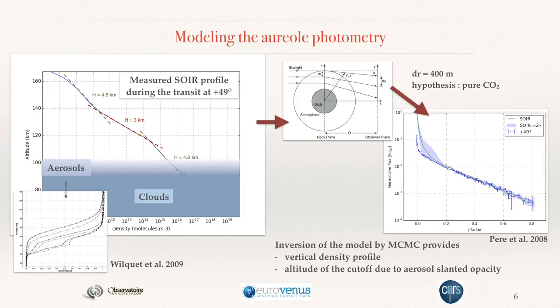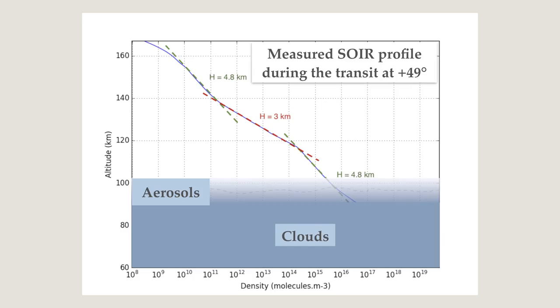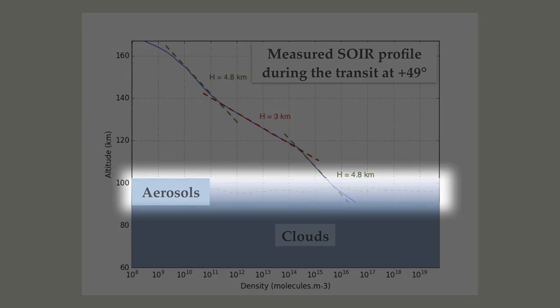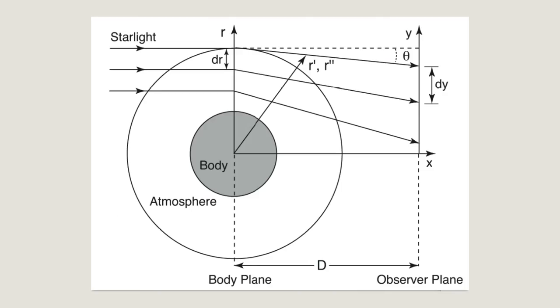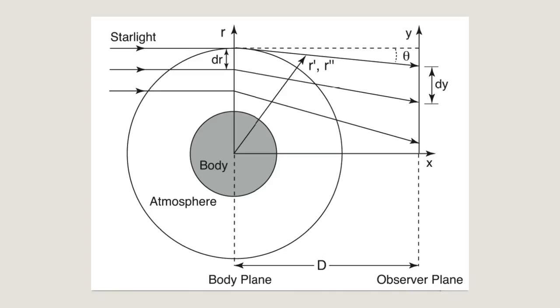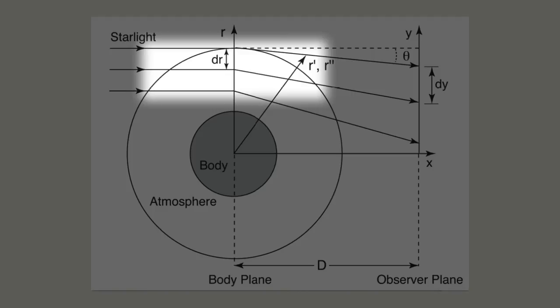We took the SUAR profile measured during the transit, represented in this plot, and added a simple model for the aerosol absorption above the cloud deck, modeling the transition between the opaque cloud region and the transparent atmosphere above. We used a profile from Wilkett et al. 2009, and everything was put in a multi-layer model in which each layer is independent in terms of density or refractivity. This is very similar to what is done for stellar occultations, except that here you have to take into account an extended source — the Sun — and not a point-like source as a star. Our measured photometry is equivalent to the sum of the contributions of all the layers.